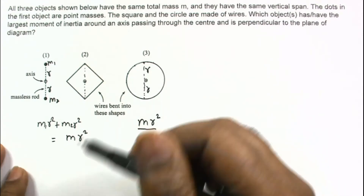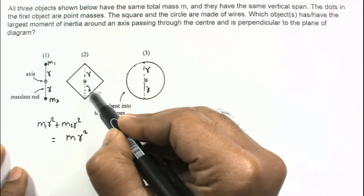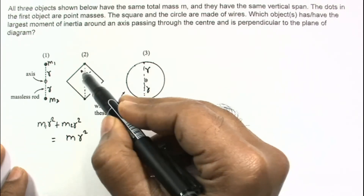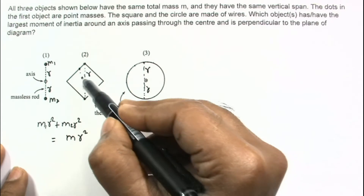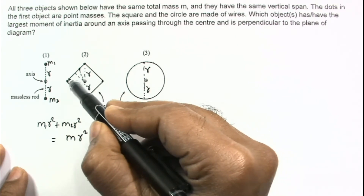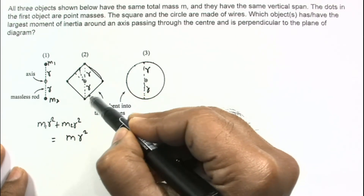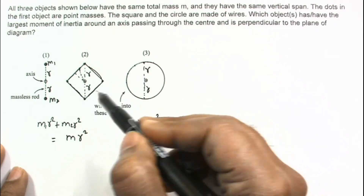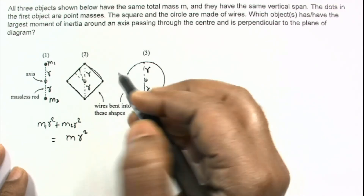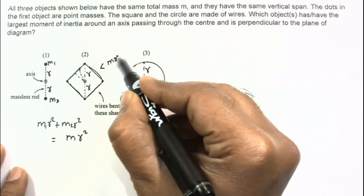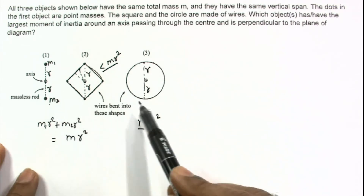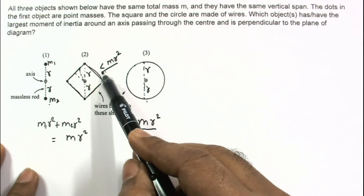For the second case (the square), this mass and this mass are at distance r, but the masses along the sides of the square are at a distance less than r from the axis. So the moment of inertia in this case will be less than M·r².